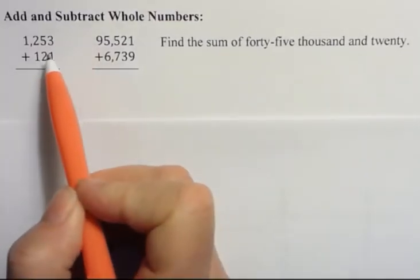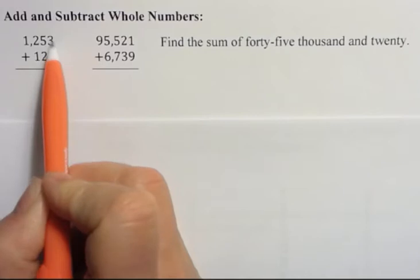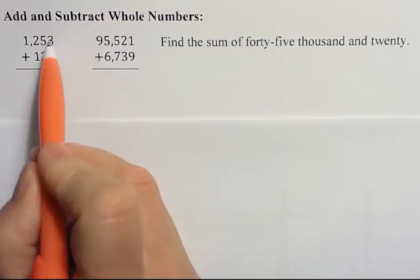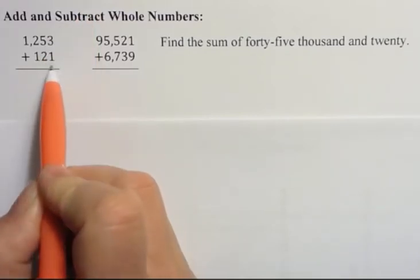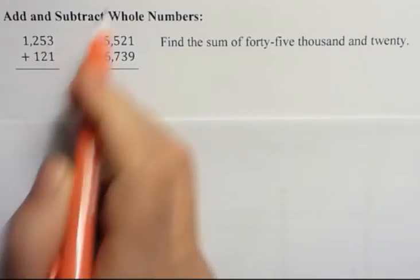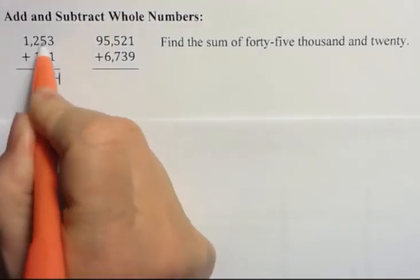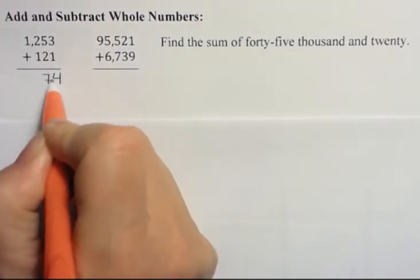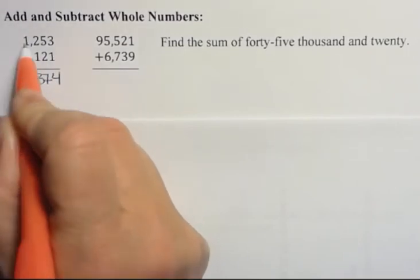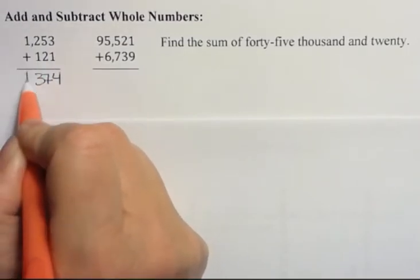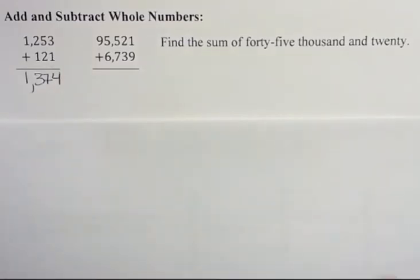When you add numbers, you want to make sure that you line them up one on top of the other according to their place value. And then just add straight down. So three plus one is four, five plus two is seven, two plus one is three. And then there's nothing under the ones, I just bring that down. And then I put a comma between the periods as we saw before.